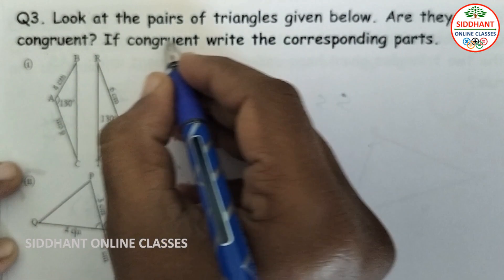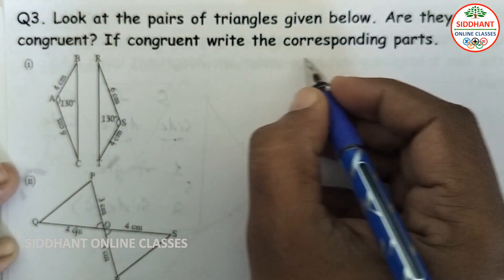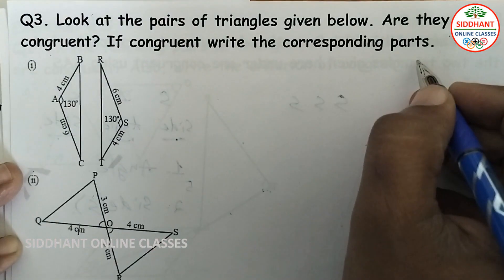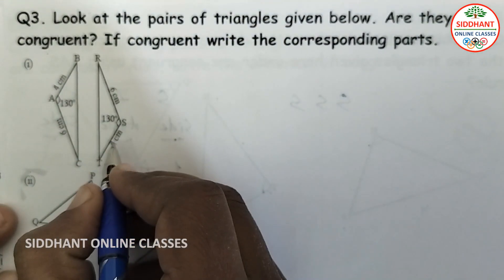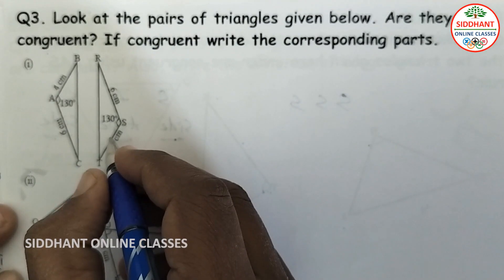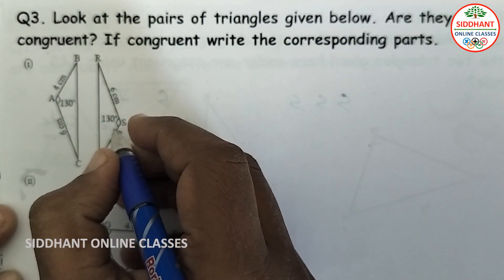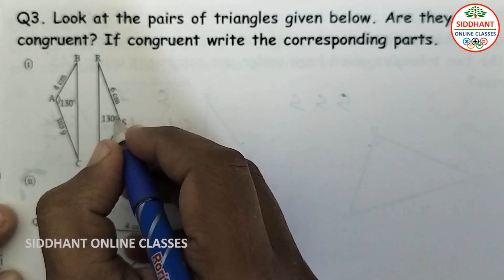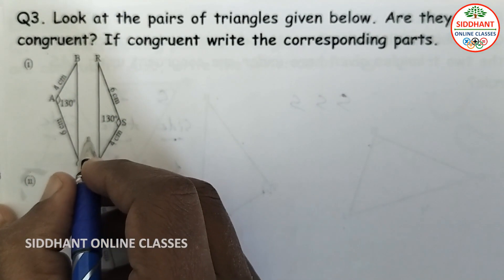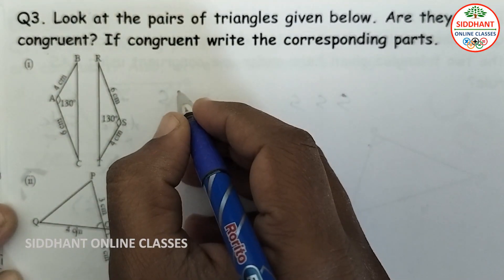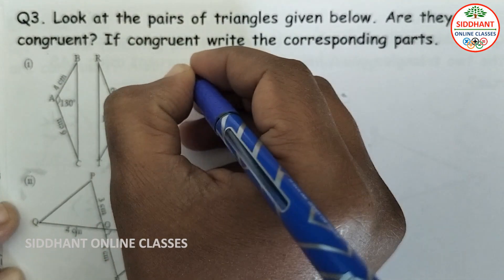Question number 3: Look at the pairs of triangles given. Are they congruent? If congruent, write the corresponding parts. We check using the SAS rule — the side should be equal, the angle should be equal, and the other side should also be equal.